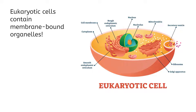Many of the specialized bits, aka organelles, inside eukaryotic cells are encased in plasma membranes, again just like the plasma membrane around the entire cell, to protect that organelle and its function.